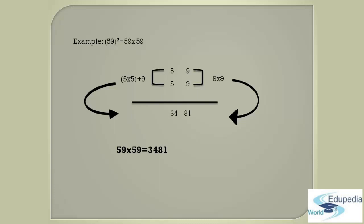The important thing to remember while applying this technique is: whenever you get a single-digit number while multiplying the digits in the ones place, you have to prefix it with zero. Also, after multiplying the digits in the tens place, you have to add the digit that is in the ones place. If you club both the answers, you will get the final result for the square of the number.